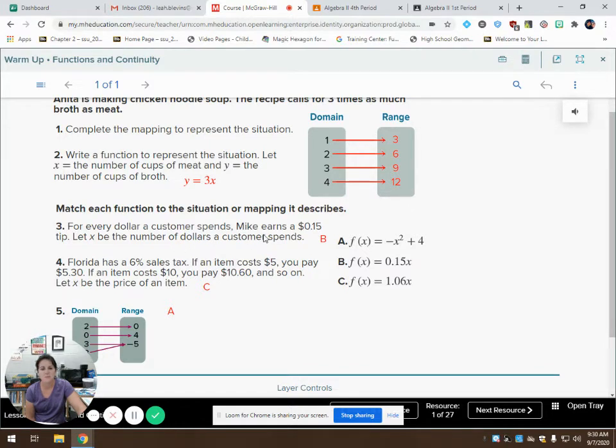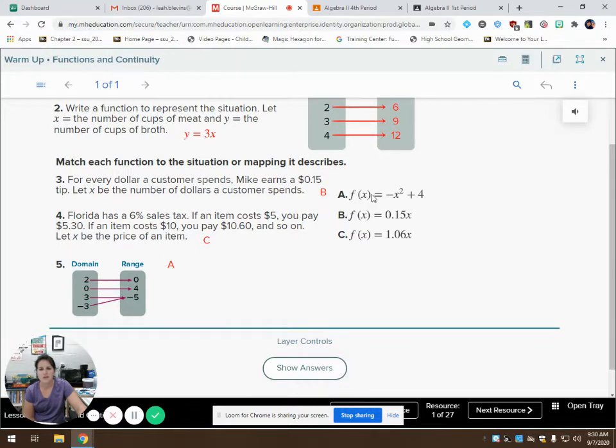So now number three, for every dollar a customer spends, Mike earns a 15 cent tip. Let x be the number of dollars a customer spends. So then we had to pick which equation is true. And you can just think about this. If someone spends $1, we know he earns 15 cents. So if they spend $2, we know he earns 30 cents.